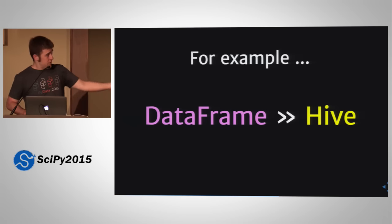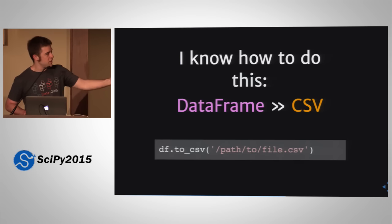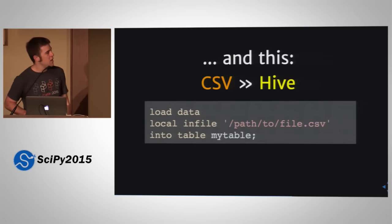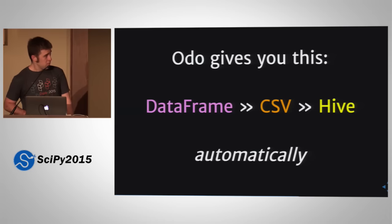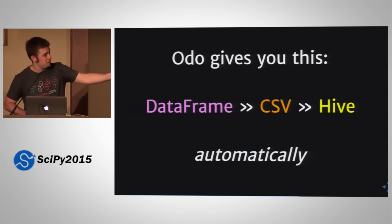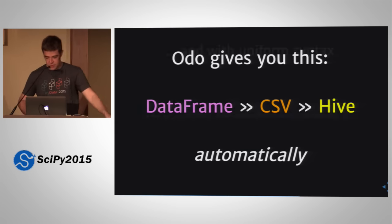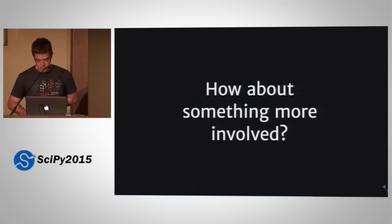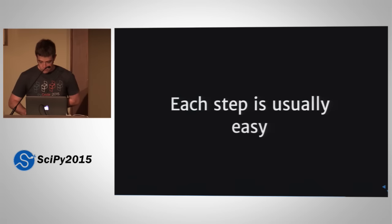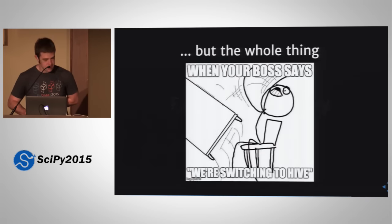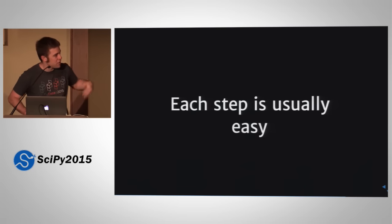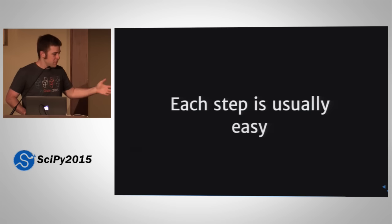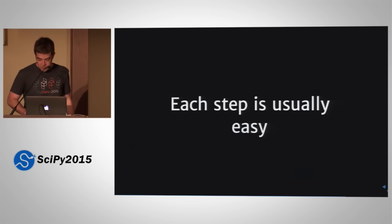How does it work? For example, I want to stick a data frame on a Hive cluster. I know how to go from data frame to CSV, and I know how to load a CSV into Hive. Odo connects the dots for you — literally. Each type is a vertex in a graph, and each edge in this graph is a function that converts one type to another type, with one uniform API. Each step of the conversion process is usually very easy — data frame to CSV, CSV to Hive — but you want to join those steps together without explicitly writing that down. You may have a chain of five conversions.